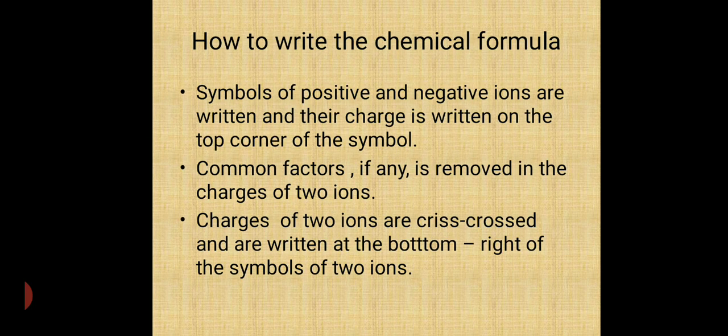How to write the chemical formula? First, symbols of positive and negative ions are written and their charges are written on the top corner of the symbol. My dear student, what are these ions? Right now, you have to remember that ions contain the symbol which is containing with charges are called as ions. But how the charges are coming, you will learn in 9th standard. So, what you have to do first for writing the chemical formula, symbol of positive and negative ions are written with their charges on the top corner of the symbol.